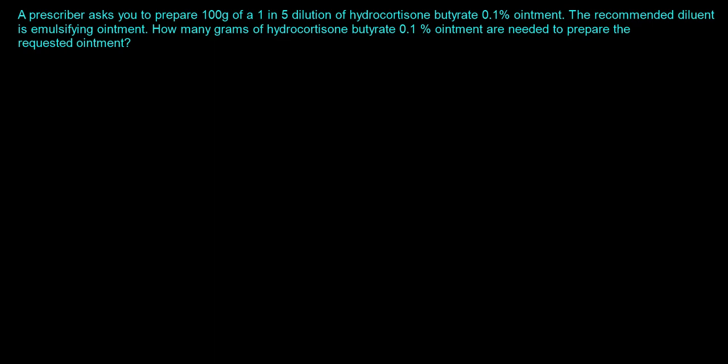The question for number one says a prescriber asks you to prepare 100 grams of a 1 in 5 dilution of hydrocortisone 0.1% ointment. The recommended diluent is emulsifying ointment. How many grams of hydrocortisone butyrate 0.1% are needed to prepare the requested ointment? The key thing you want to pay attention to is the 1 in 5 dilution, the concentration, and the quantity.